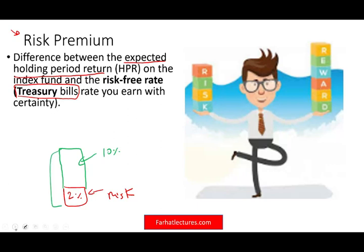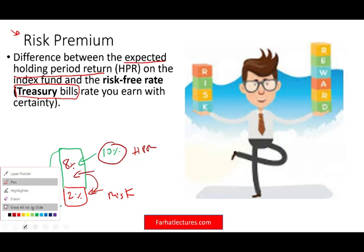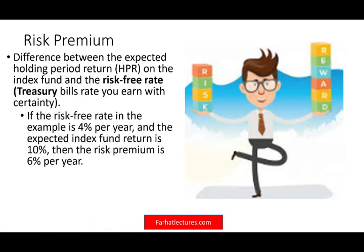The risk premium you are taking is 8% — the difference between your expected holding period return of 10% and your risk-free guaranteed rate. So by undertaking this investment, you are getting a risk premium of 8%, because if you don't want to, you can make a guaranteed 2%. So if the risk-free rate in the example is 4% and the expected index fund return is 10%, the treasury bill will give you 4%, but if you invest in index stocks you make 10% — therefore the extra 6% is the risk premium.